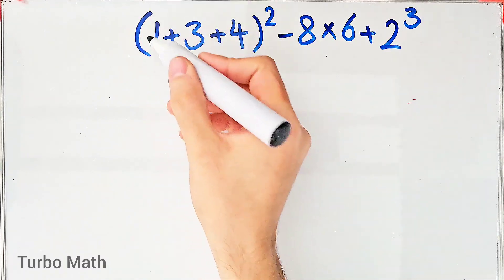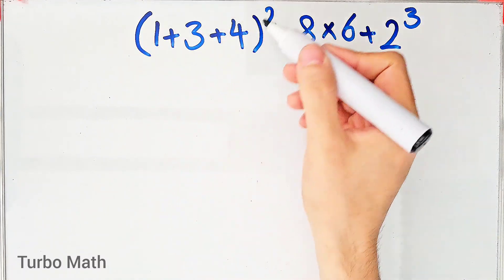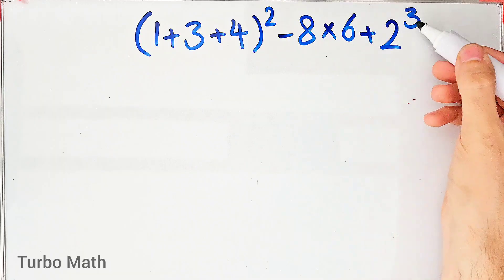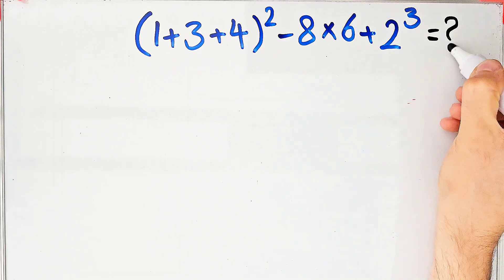Open parentheses one plus three plus four closed parentheses to the power of two minus eight times six then plus two to the power of three. What is the answer of this question?